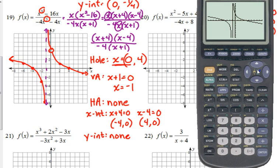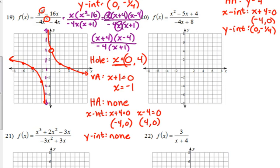Remember that the calculator does not show you the detail of a hole. That's something that you have to know to be able to put in there yourself. And the vertical asymptote, obviously, the calculator graphs as a solid line. But on your graph, it should be a dashed line.